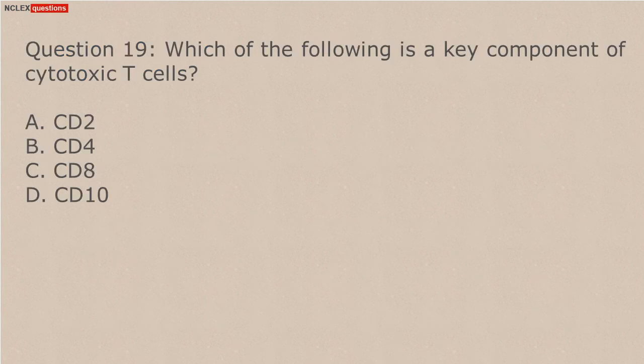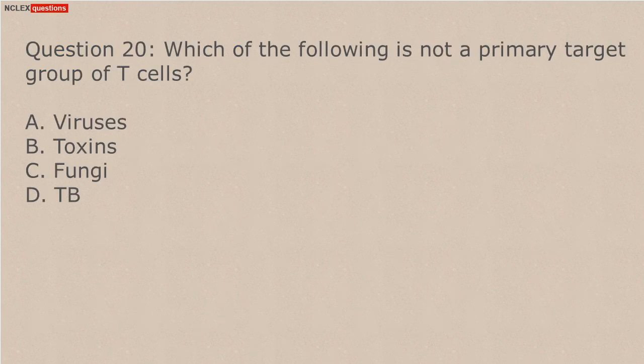Question 17: Which of the following types of cytokines? Answer: D. Carotid arteries. Answer: A. Mediastinum. Answer: A. Delayed hypersensitivity.